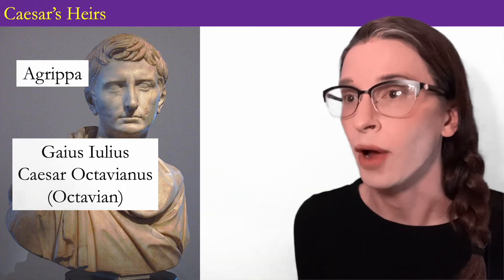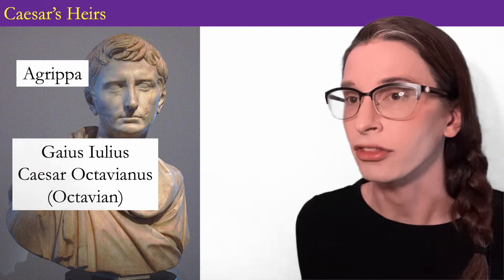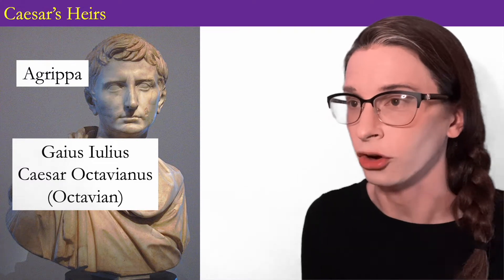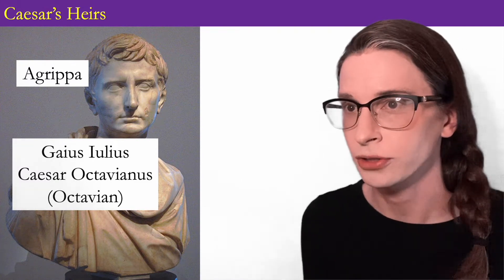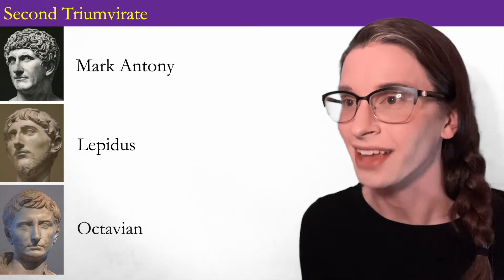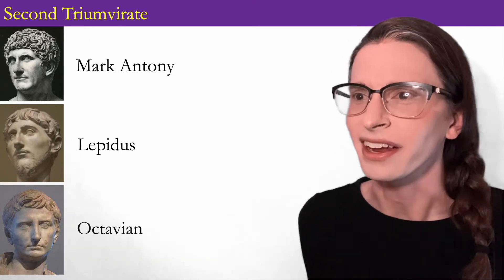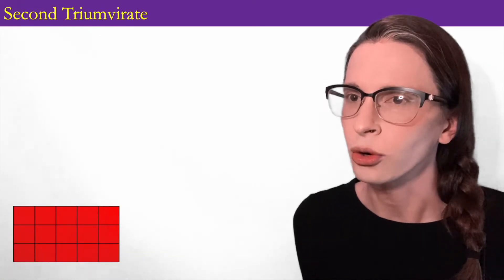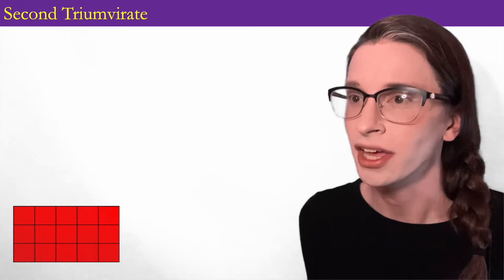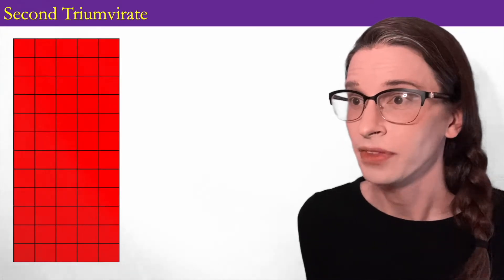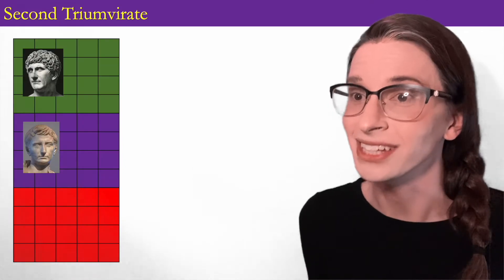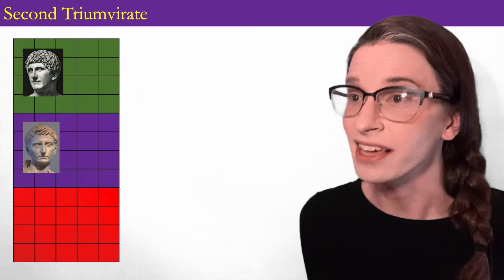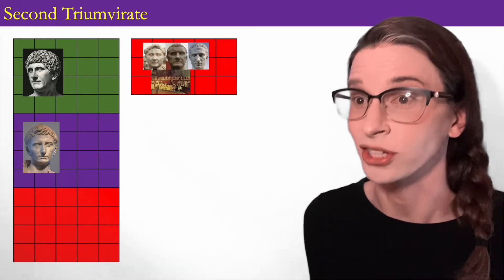Octavian proves himself a force to be reckoned with by marching on Rome with eight legions to demand the consulship. Lepidus reaches out to him to form an alliance with him and Antony against their common enemy, the conspirators — the Second Triumvirate is born: Antony, Lepidus, and Octavian. Rome has seen an explosion of military might. At the time of the first triumvirate there were 15 total Roman legions of about 5,000 soldiers each; now there are 60. Antony and Octavian command forces of 20 legions each, meaning both of these warlords now have more soldiers than Caesar, Pompey, Crassus, and the Senate of their time combined.